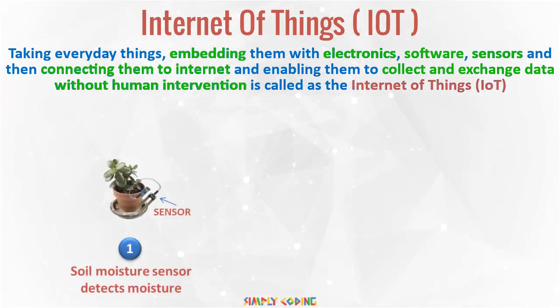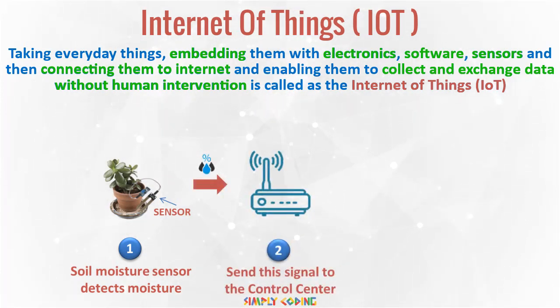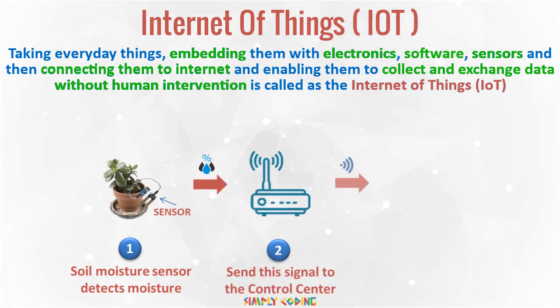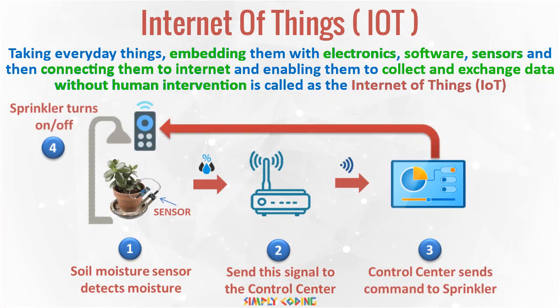For example, here is a sensor that detects the moisture in the soil and automatically sends an alert to the command center, which automatically turns on the sprinkler through a remote switch.